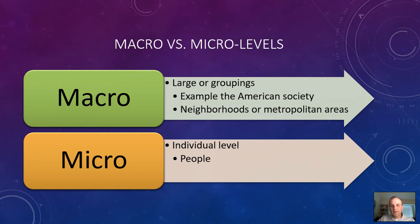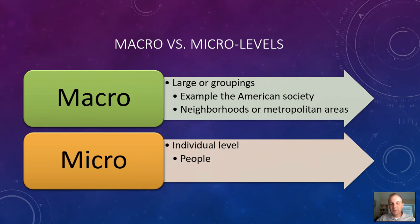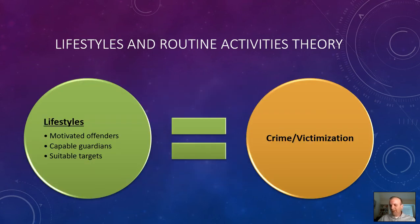I've heard this theory referred to as a mid-level theory, as it kind of incorporates both macro and micro elements — neighborhoods, for instance, might be considered a mid-level approach. So it has micro-level and macro-level components that can be tested and assessed, and there are many different empirical assessments of this theory. It's a useful theory in explaining crime and victimization to some degree.